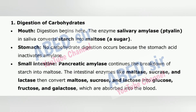Stomach: no carbohydrate digestion occurs because the stomach acid inactivates amylase. Small intestine: pancreatic amylase continues the breakdown of starch into maltose. The intestinal enzymes like maltase, sucrase, and lactase then convert maltose, sucrose, and lactose into glucose, fructose, and galactose, which are absorbed into the blood.